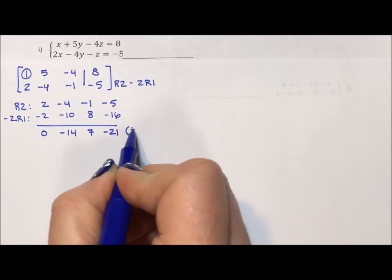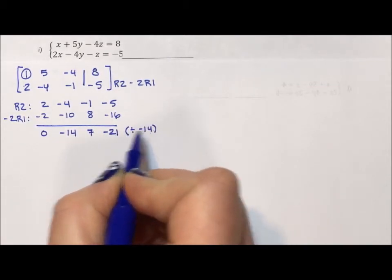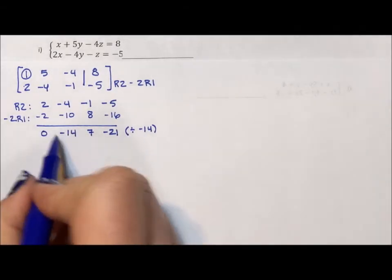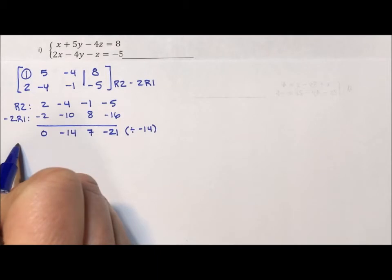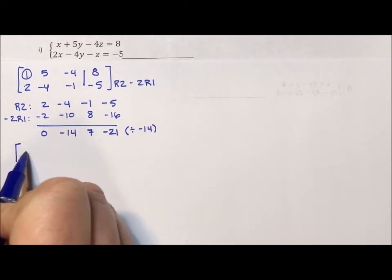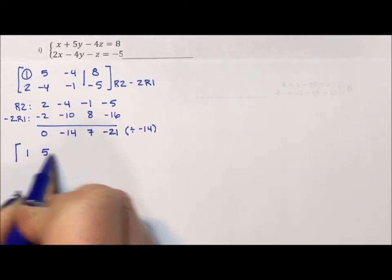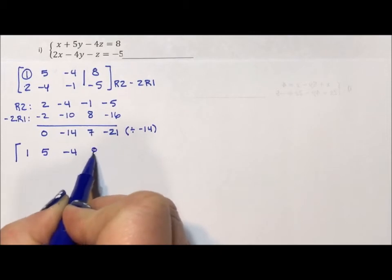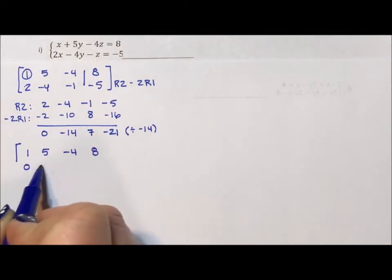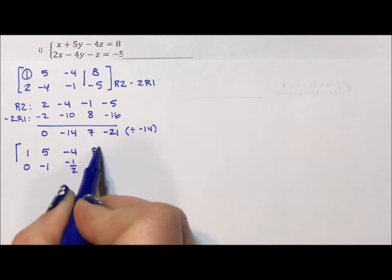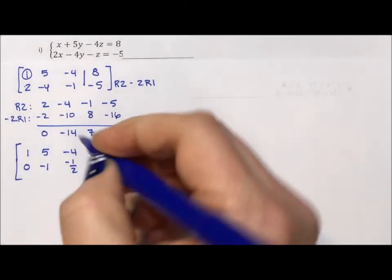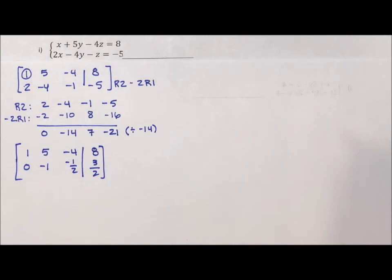I'm going to divide through by negative 14 so I can get this leading number 1 because that's ultimately what I'm trying to do. So my new matrix becomes, my first row didn't change, 1, 5, negative 4, 8. My second row is going to become 0, negative 1, negative 1 half, and 3 halves. Brackets to make it a matrix, a line to make it an augmented matrix, and we're good to go.